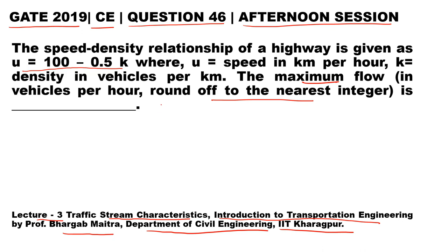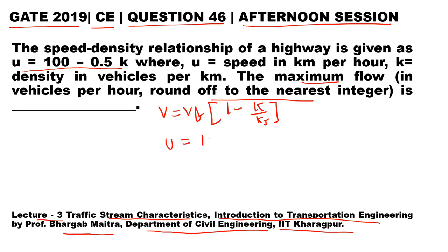As we all know, the standard equation to represent the speed-density relationship of a highway is given as v = vf (1 - k/kj). Now let us compare this standard format to our given equation, which is u = 100 - 0.5k.